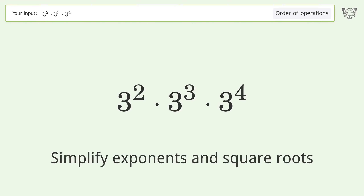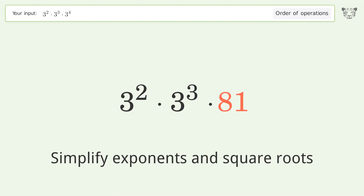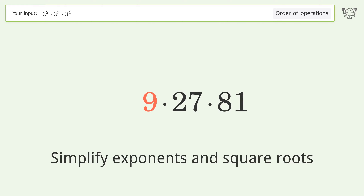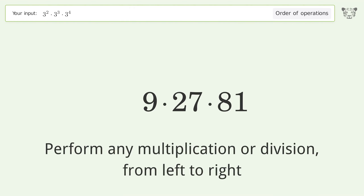Simplify exponents and square roots: 3 to the power of 4 equals 81, 3 to the power of 3 equals 27, 3 to the power of 2 equals 9. Then perform any multiplication or division from left to right: 9 times 27...